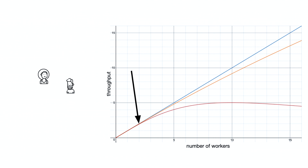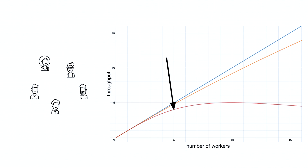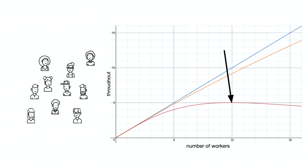Now we want to get more work done, so we grow our team. With two people, we've introduced the complexity of one feedback loop to coordinate, and we can now do twice the work with hardly any drop-off. We grow to five people — complexity grows to ten feedback loops, and we're starting to see a drop-off, but lots of work can still happen. We grow to ten people — complexity is now up to 45 feedback loops. We've increased throughput, but now we're getting to the point where after this we're going to hit diminishing returns.